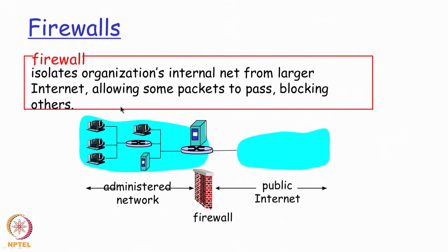A firewall is a device that typically tries to isolate the organization's internal and the external network. The external network here would typically be the internet to which the organization would want to be connected for doing its business activities. Through this firewall the administrator would typically want to control what packets are allowed to pass through and what kind of packets should be blocked.